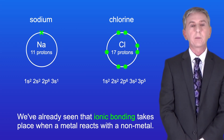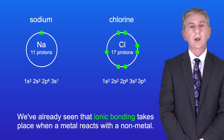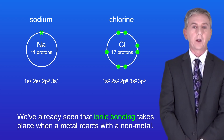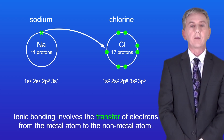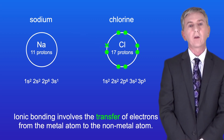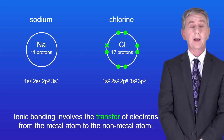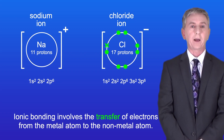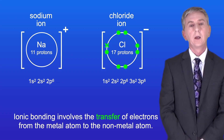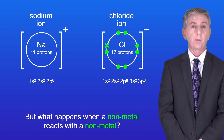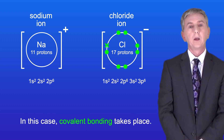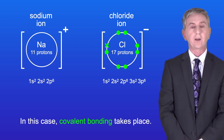We've already seen that ionic bonding takes place when a metal reacts with a non-metal. Ionic bonding involves the transfer of electrons from the metal atom to the non-metal atom. But what happens when a non-metal reacts with a non-metal? Well in this case covalent bonding takes place.